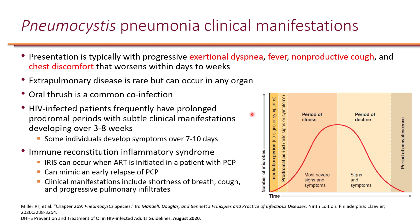Clinical manifestations include exertional dyspnea, fever, non-productive cough, and chest discomfort, which worsen over days to weeks. PCP is a progressive disease; the prodromal period can extend from three to eight weeks in HIV patients, making it very slow-progressing.